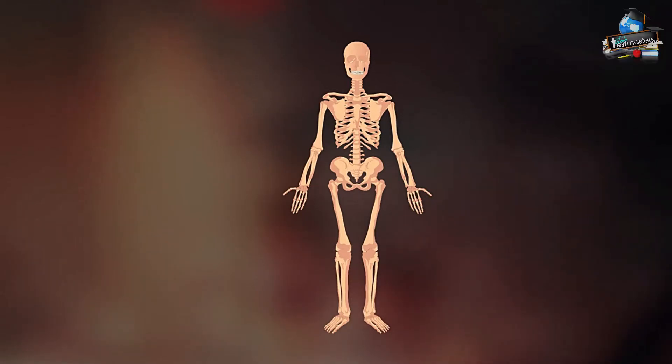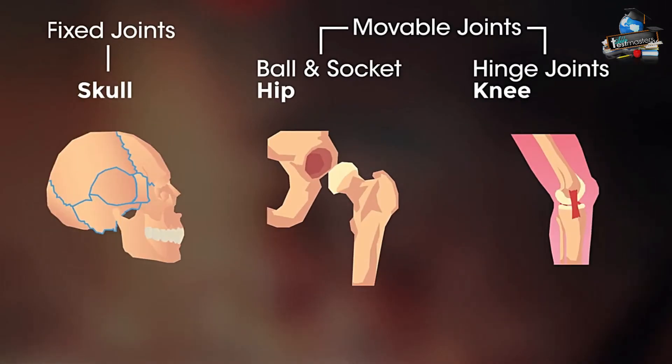Different types of movement are possible because there are different types of joints. So let's have a look at the main types.